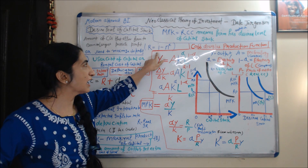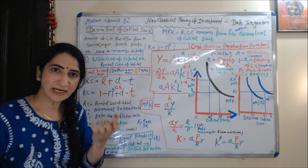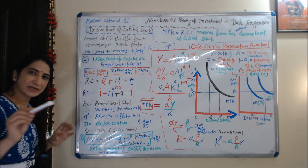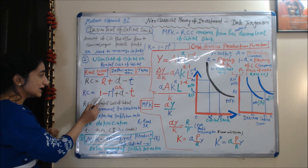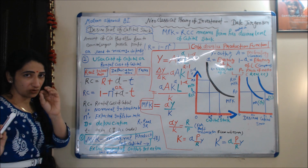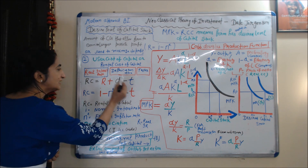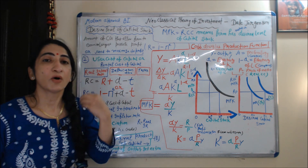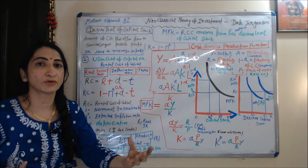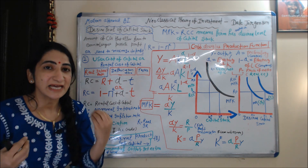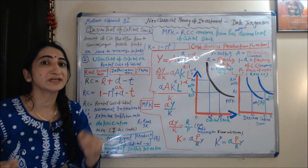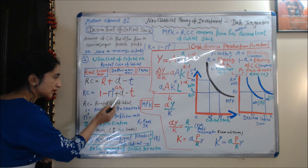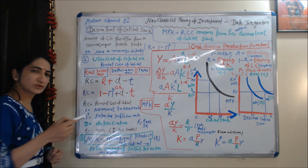So real interest rate R is equal to I minus π^E. We can replace R with I minus π^E in the formula. Now we talk about D — D is depreciation. When we continue using capital over a time period, our capital wears out, meaning the value of capital is reducing. That's why we need to add depreciation to the rental cost of capital.